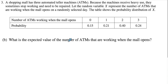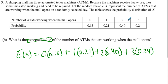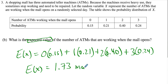Part B — what is the expected value? We have to focus on showing what we're doing and how we get our answer. The expected value for a random variable is when you multiply each value by its probability and then add those products — multiply down and add across. So E(X) equals zero times 0.15, plus the rest of the values. When you plug it all into the calculator, you should get about 1.73 machines. Don't forget the units. That's part B — not too difficult.